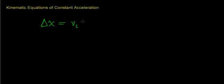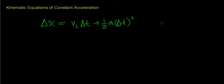In a previous video, we defined a kinematic equation that said the change in distance of an object that's accelerating is equal to the initial velocity of the object times the change in time, plus one-half the acceleration of the object times the change in time squared. We also had another kinematic equation that said that acceleration is equal to the change in velocity per change in time. We were able to algebraically manipulate this equation to find a final velocity, given the initial velocity, the acceleration, and the change in time.